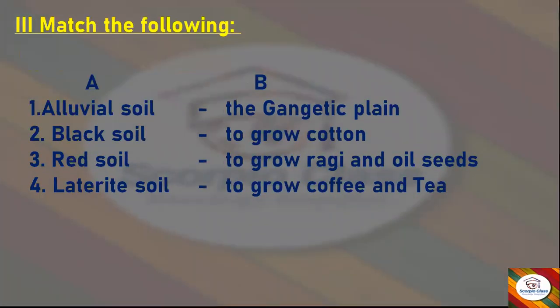Next we have the third main: Match the Following. We have Column A and Column B. The correct matches are: Alluvial soil — the Gangetic Plain; Black soil — to grow cotton; Red soil — to grow ragi and oil seeds; Laterite soil — to grow coffee and tea. These are the correct match-ups matched rightly in front of the questions.